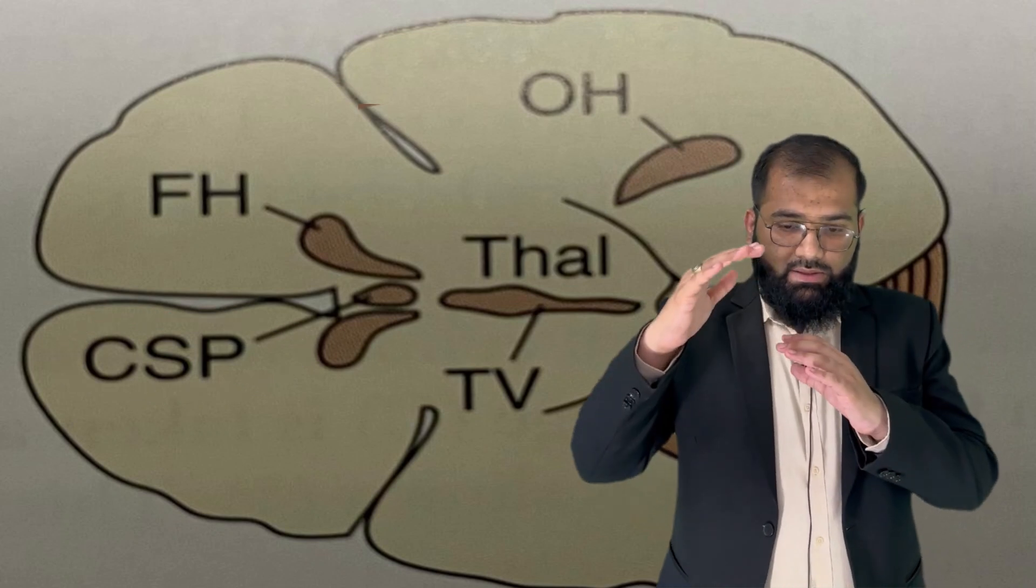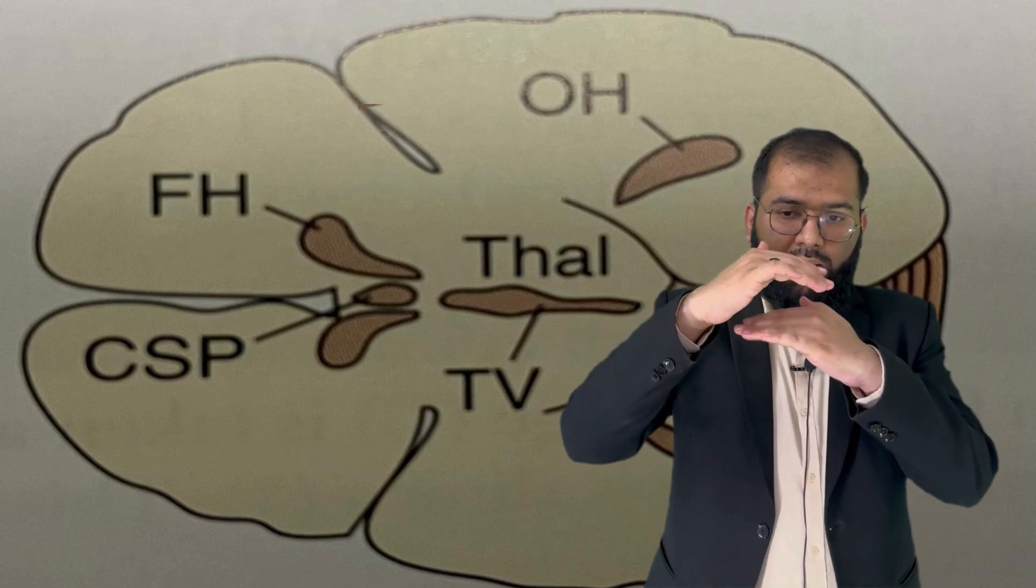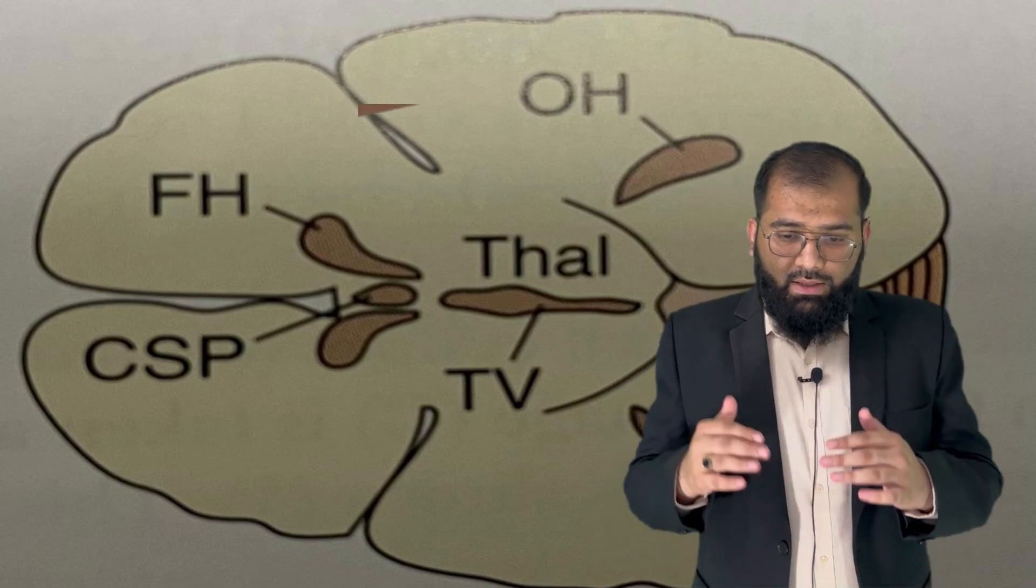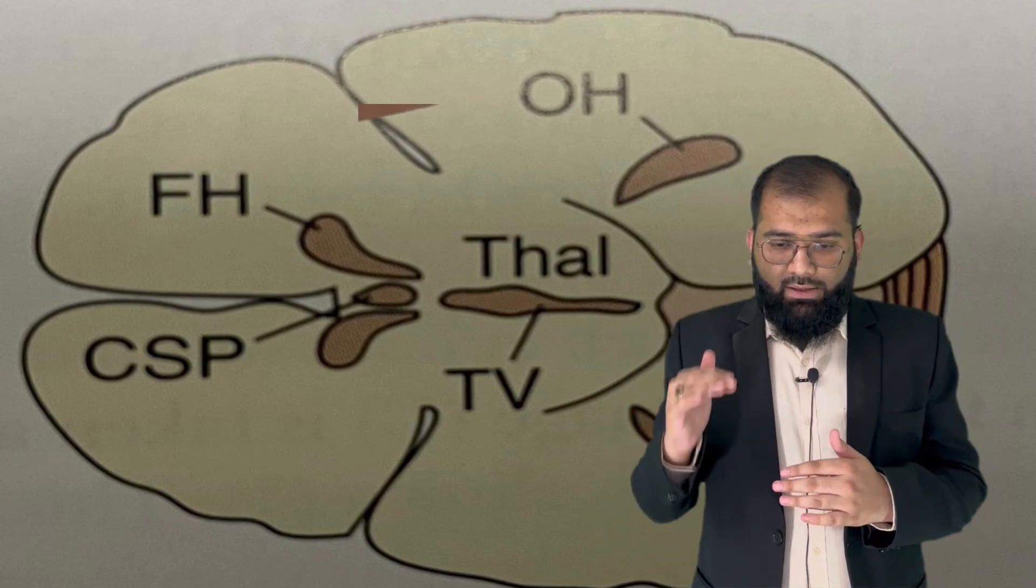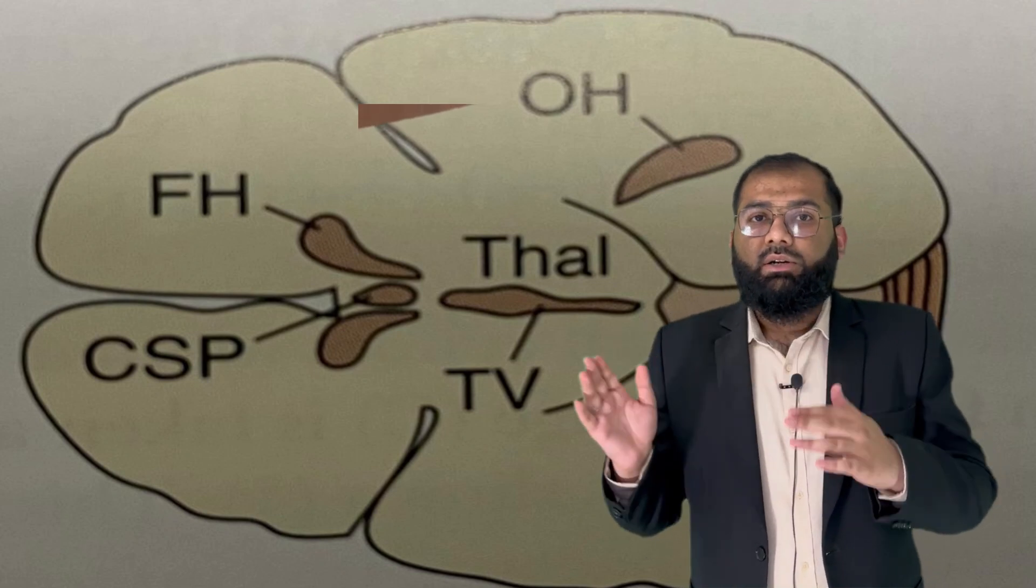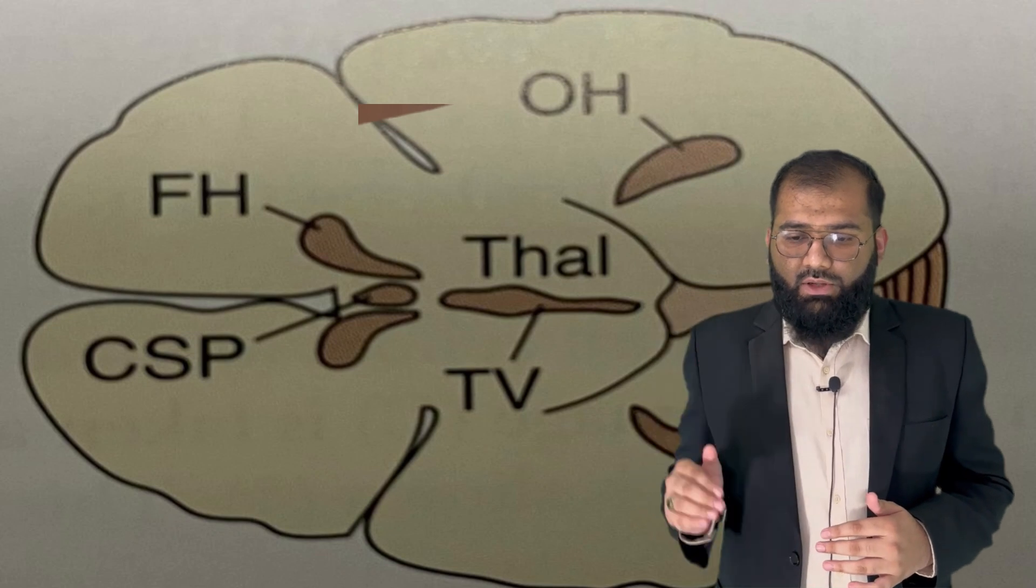CSP is a primitive space that is later taken up by the corpus callosum. Then you see there are two thalami; between the thalami is the third ventricle, and you are able to see the occipital horns.